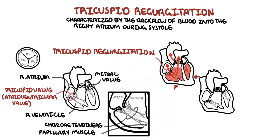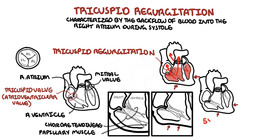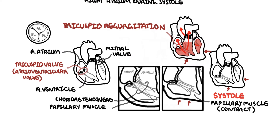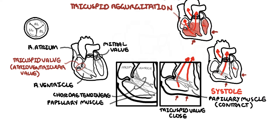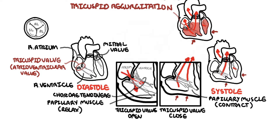During ventricular systole, the papillary muscles contract, causing the tricuspid and mitral valves to close, preventing blood from flowing to the atrium and allowing blood to flow to the pulmonary artery and the aorta. In diastole, the papillary muscles relax and the tricuspid and mitral valves open, allowing blood to fill the ventricles.